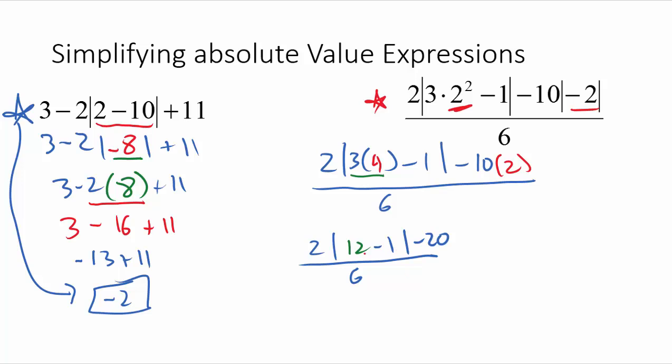Now, the 12 minus 1 here, we can evaluate next. We're trying to get that down to one single number. So this would be 2 times the absolute value of 11 minus 20, all divided by 6. So I just took 12 minus 1 here, and I got 11.